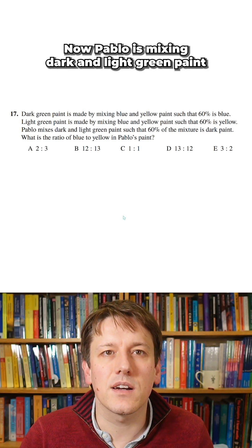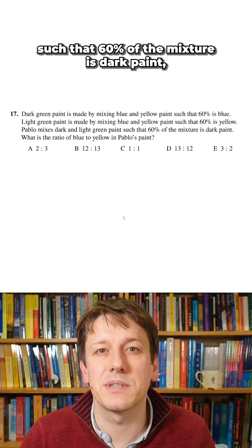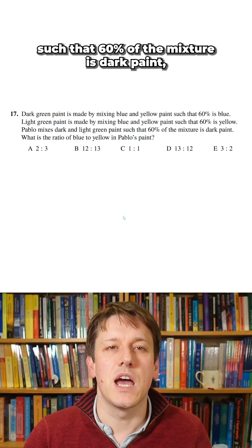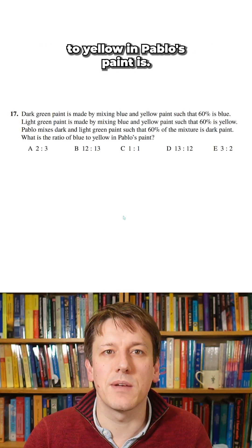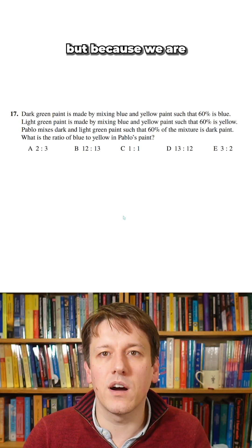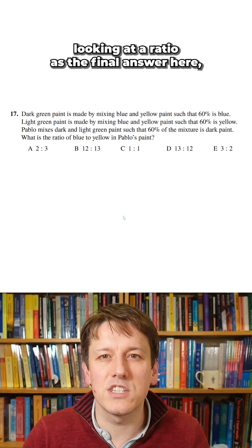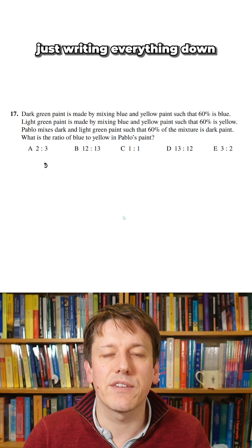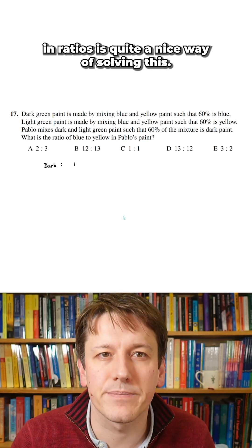Now Pablo is mixing dark and light green paint such that 60% of the mixture is dark paint, and we want to know what the ratio of blue to yellow in Pablo's paint is. You could do this in all sorts of ways, but because we are looking at a ratio as the final answer here, just writing everything down in ratios is quite a nice way of solving this.